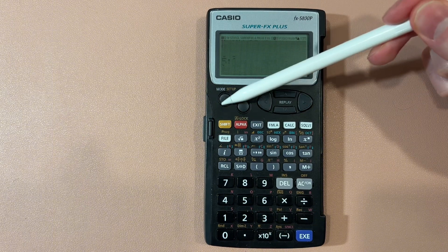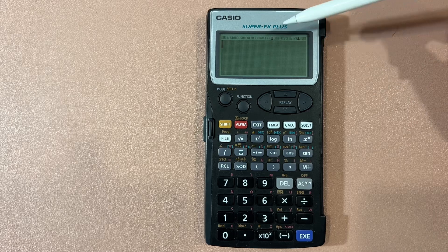We can do the same thing. Shift mode, three is degrees. So now we have the D in here.